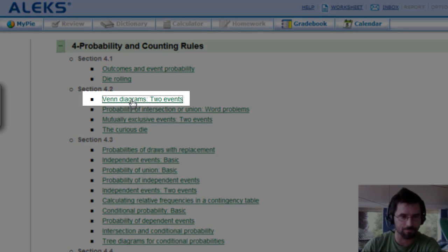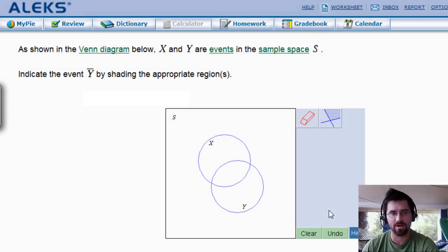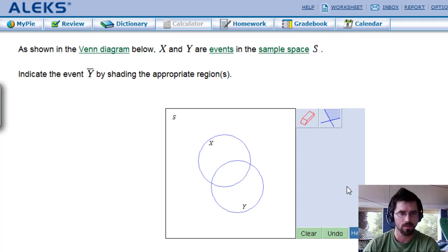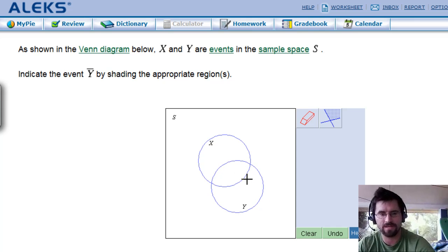This concept right here is actually a very simple concept, and I'm going to go through a bunch of these. So it says indicate the event Y with a bar over it by shading the appropriate region. Well, Y is anything in this circle. Venn diagrams are used to indicate what is part of a set and what is not part of a set, and if there's more than one set, what's part of both or not part of both.